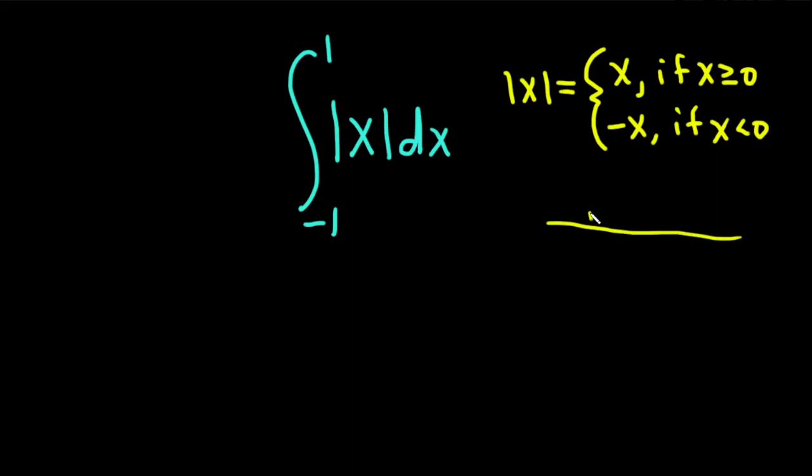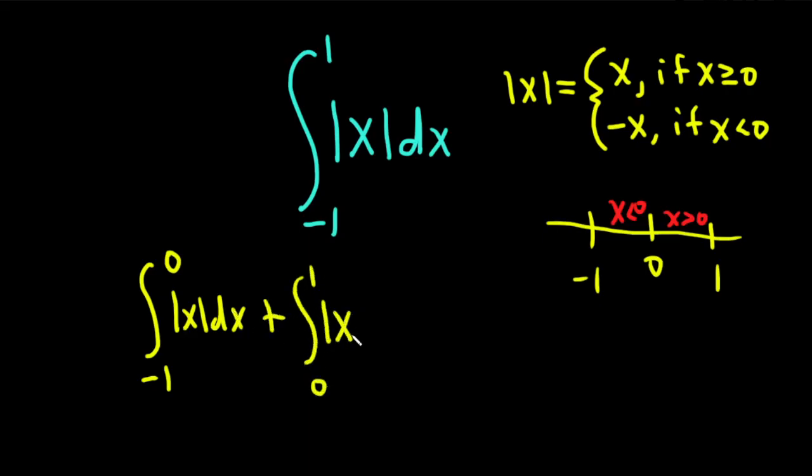So if you think about the interval, here's negative 1, here's 1, then here is 0, and so x is going to be less than 0 over here, and x will be greater than 0 over here. So we can use this little picture to break up our integral. So this is going to be the integral from negative 1 to 0, absolute value of x dx, plus, and then we're going to go from 0 to 1, absolute value of x dx.